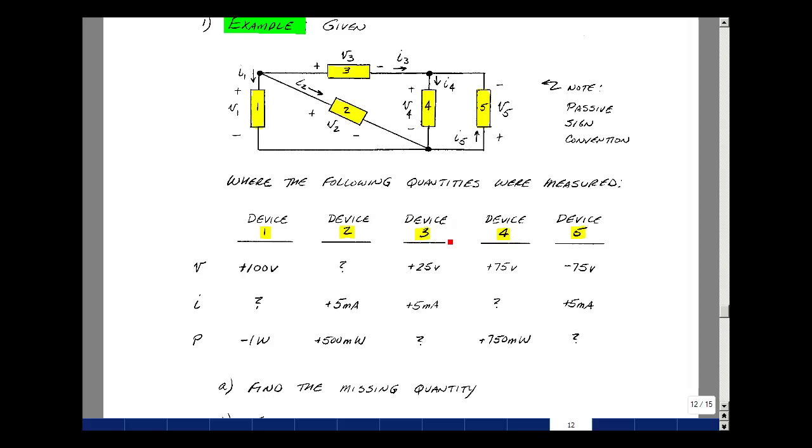For device number three, I've got the voltage and current, so I'll multiply those two and get 125 milliwatts. And again, that would be power absorbed.